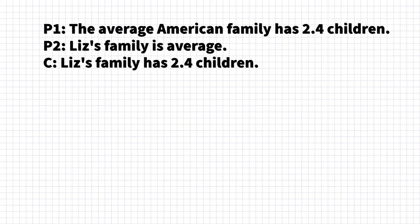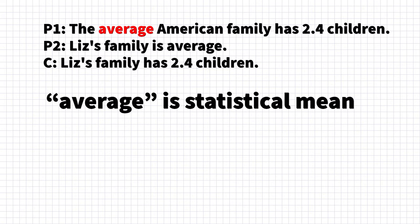Notice in this argument there are two instances of the word 'average,' and the word average is ambiguous — it can mean a number of different things. For the truth condition, the question is: under what reading of 'average' would we accept the truth of the propositions? In the first premise, we would only accept it as true if we understood average as referring to the statistical mean — that is, taking the total number of children and dividing by the total number of families.